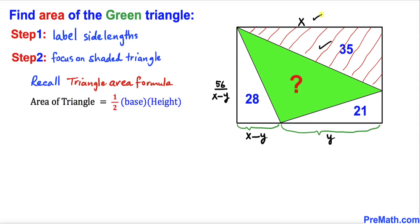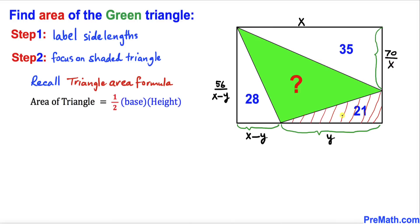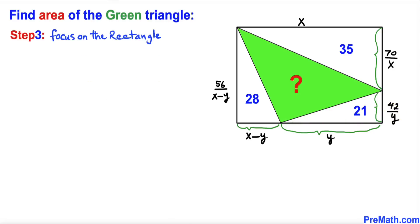Now let's focus on the next shaded triangle. Its base is x and its area is 35, so this side has got to be 70 divided by x. For the third shaded triangle, the area is 21 and the base is y, so this side length has got to be 42 divided by y.